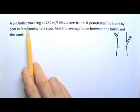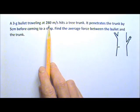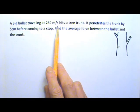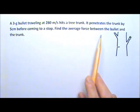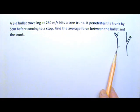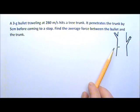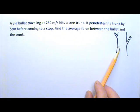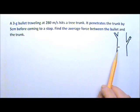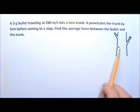A 3 gram bullet traveling at 280 meters per second hits a tree trunk. It penetrates the trunk by 5 centimeters before coming to a stop. We want to find the average force between the bullet and the tree trunk.